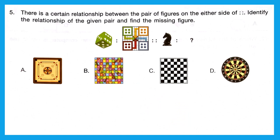Question 5: there is a certain relationship between the pair of figures on either side of the analogy. We have to find the relationship and find the missing figure. The dice is used to play Ludo. On the second pair, there is a symbol of a horse, which we find in the game chess. The right answer is option C, chess.